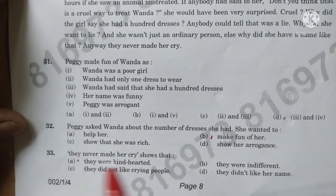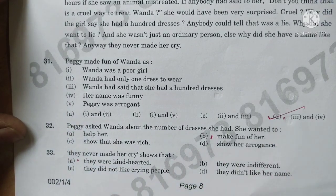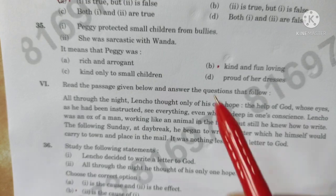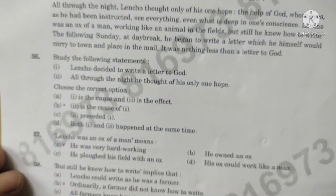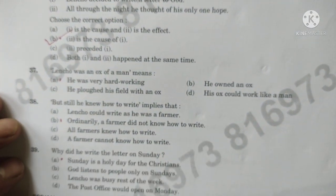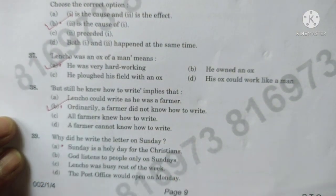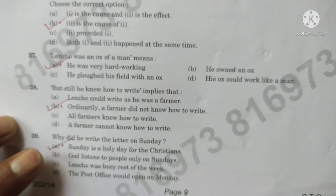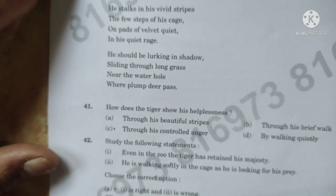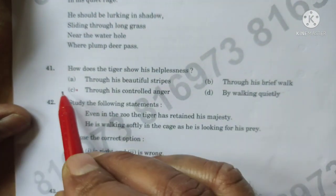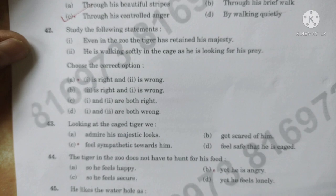Question number 31, D is the correct option. Question number 32, B is the correct option. Question number 33, A is the correct option. Question number 34, A is the correct option. Question number 35, B is the correct option. Question number 36, B is the correct option. Question number 37, A is the correct option. Question number 38, B is the correct option. Question number 39, A is the correct option. Question number 40, B is the correct option. Question number 41, C is the correct option. Question number 42, A is the correct option.